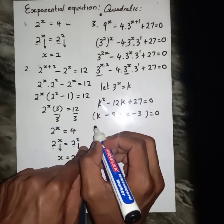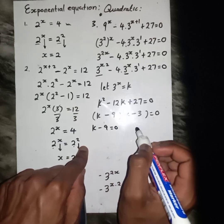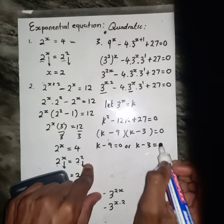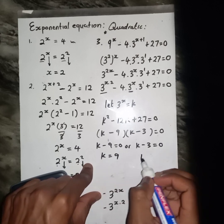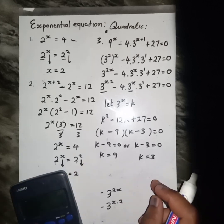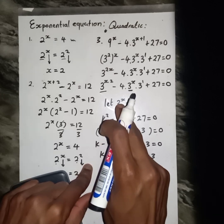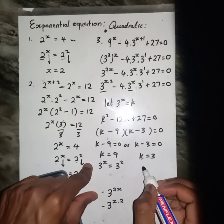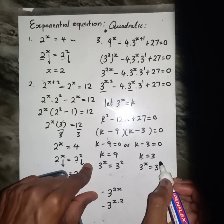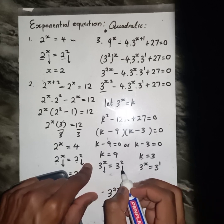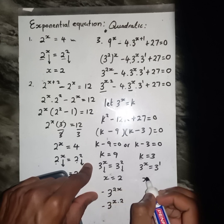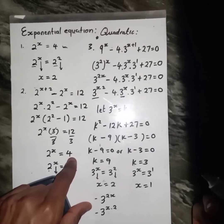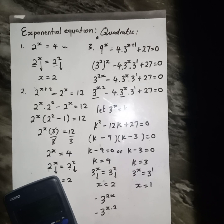Then at this point I can say: k minus 9 equals zero, so k equals 9; and k minus 3 equals zero, so k equals 3. Don't forget that k is 3 to the power x. So 3 to the power x equals 9, which is 3 squared — drop the exponent, x equals 2. Or 3 to the power x equals 3 to the power 1 — drop the exponent, x equals 1. So x equals 2 or x equals 1. This is how we solve exponential equations.